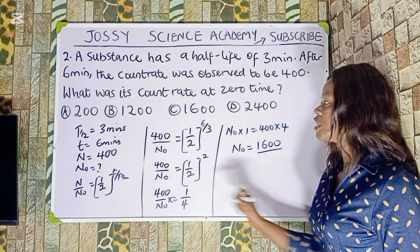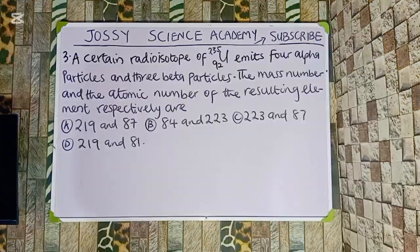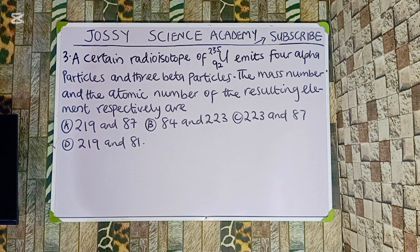Uranium-235 with atomic number 92 emits 4 alpha particles and 3 beta particles. The mass number and atomic number of the resulting element respectively are: Option A: 219 and 87. Option B: 84 and 223. Option C: 223 and 87. Option D: 219 and 81.